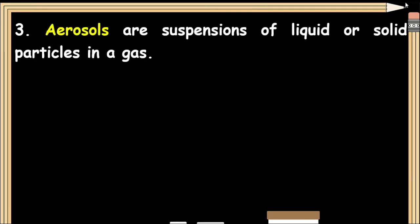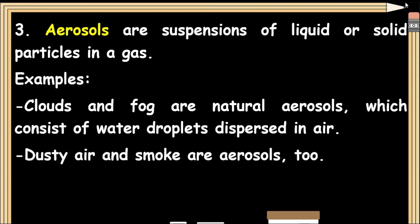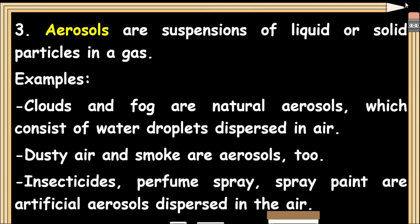Aerosols are suspensions of liquid or solid particles in a gas. Clouds and fog are natural aerosols, consisting of water droplets dispersed in air. Dusty air and smoke are aerosols too. Insecticides, perfume spray, and spray paint are artificial aerosols dispersed in the air.